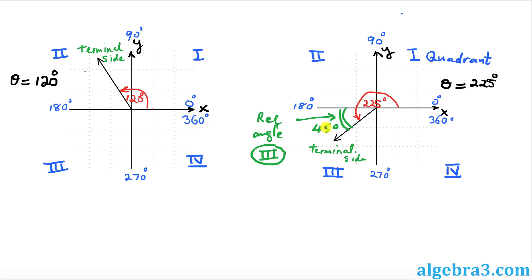Our reference angle is 45 degrees and it is in the third quadrant. Now the left-hand side example: our angle is 120 degrees. As you can see, our terminal side shows up in the second quadrant. The reference angle is going to be the smallest angle between the x-axis and this terminal side. That's going to be 180 take away 120, which is 60 degrees. So this is the reference angle, and it is in the second quadrant.